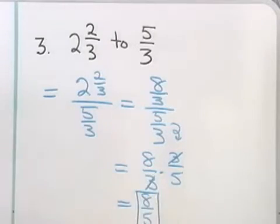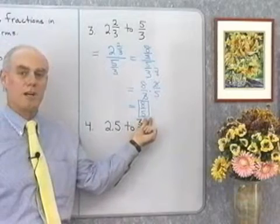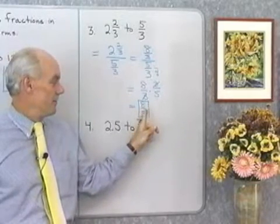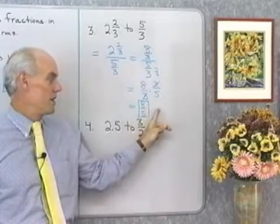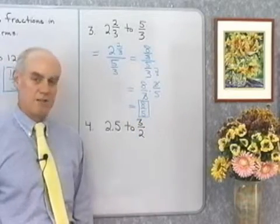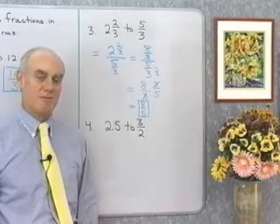That improper fraction, 8 fifths, is in lowest terms, so I'll leave it that way. If I was just working with numbers, I might change this into a mixed number, but since we're working with ratios, we'll just leave it at 8 fifths.